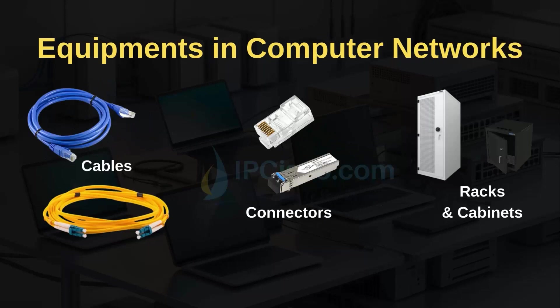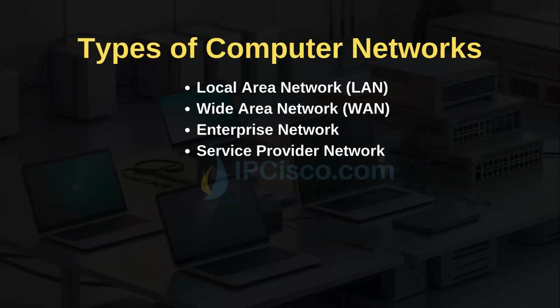Besides network devices, there is also equipment used in computer networks. Some of them are: cables, connectors, racks, cabinets, etc. To connect devices we use cables and connectors in a wired network. If our network is wireless, then antennas on the devices are enough, although even in wireless networks we still have to use some wires and connectors. Racks and cabinets are not a requirement but are used in large networks with specific network rooms or data centers.